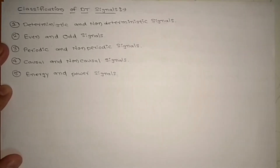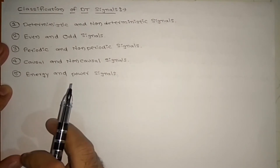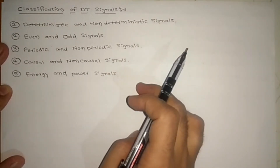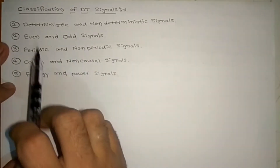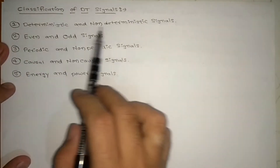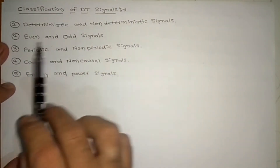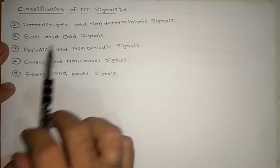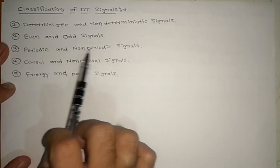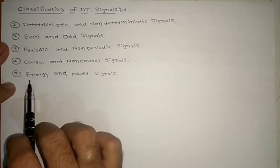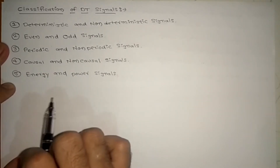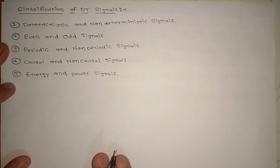Let us start this lecture on classification of discrete time signals. Same as continuous time signals, we classified 5 types. First one is deterministic and non-deterministic signal. Second one is even and odd signal. Third one is periodic and non-periodic signal. Fourth one is causal and non-causal signal. Fifth one is energy and power signal. Let us start one by one.